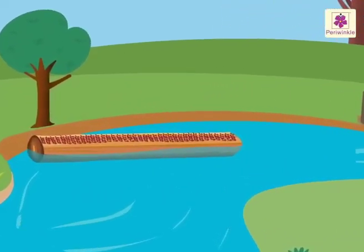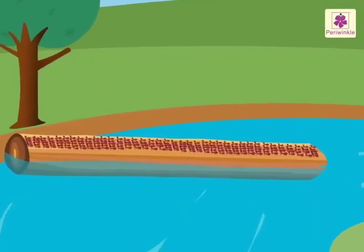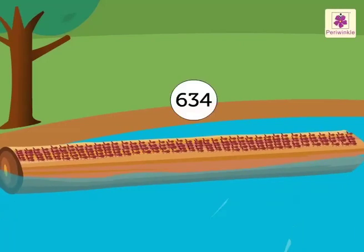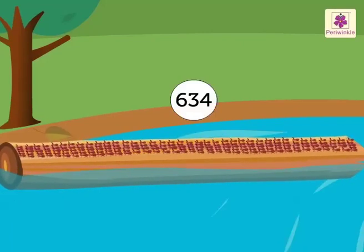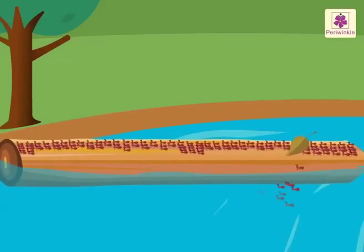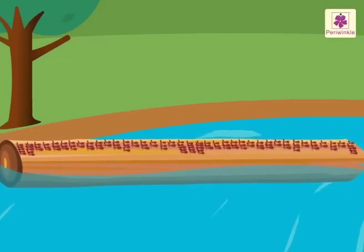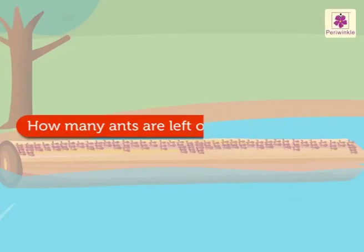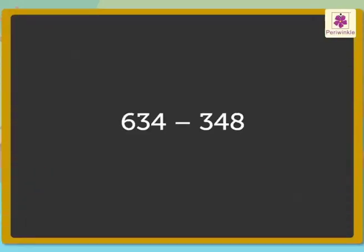Look at the log of wood floating in the river. There are 634 ants on it. Look, 348 ants fell in the river. How many ants are left on the log of wood? Here we have to subtract 348 from 634.